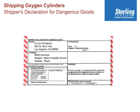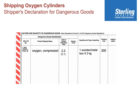As a shipper, we ask you not to complete the airway bill number, airport of departure, and airport of destination. If you use a freight forwarder, such as Quick or Sterling, we are able to fill these out for you, as is the airline itself.